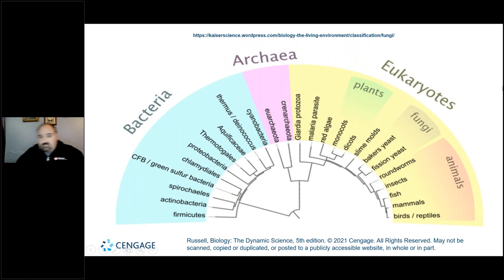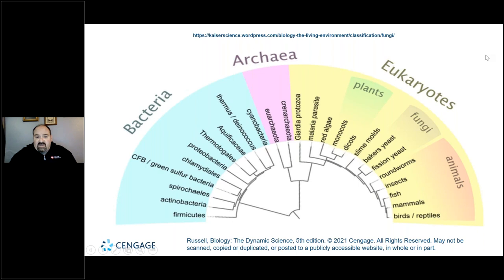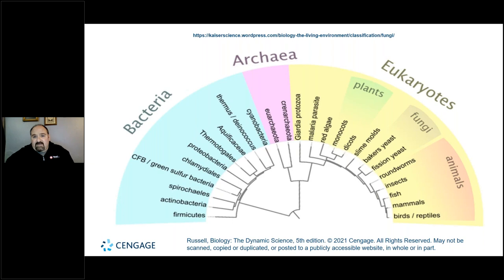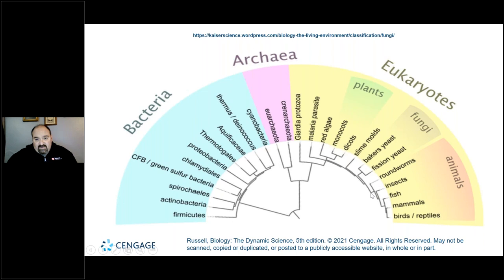I've added some more slides to our presentation and will post the updated Chapter 30 PowerPoint after our sessions today. I wanted to show you and remind you that in the beginning of the chapter we talked about how animals and fungi are more closely related than plants — they share a more common ancestor with each other than they do with plants.